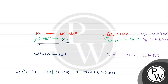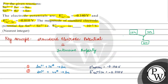F cancels out throughout. The negative signs on the right cancel appropriately, so E°_final = [2 × 0.140 + 4 × (-0.010)] / 2 = [0.280 − 0.040] / 2 = 0.240 / 2 = 0.120 V.